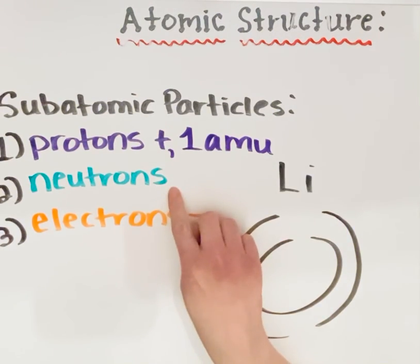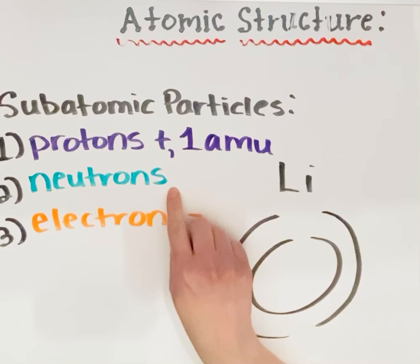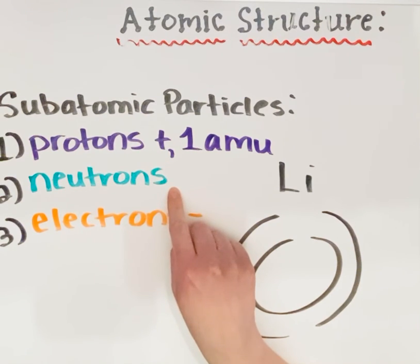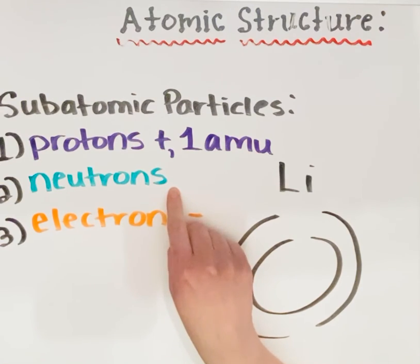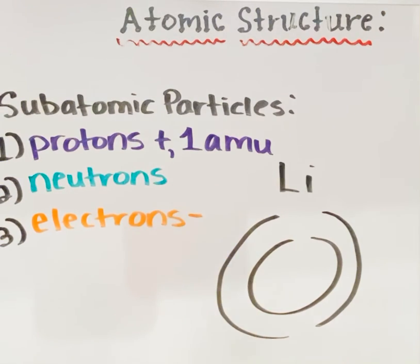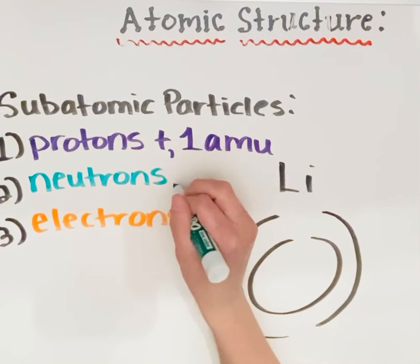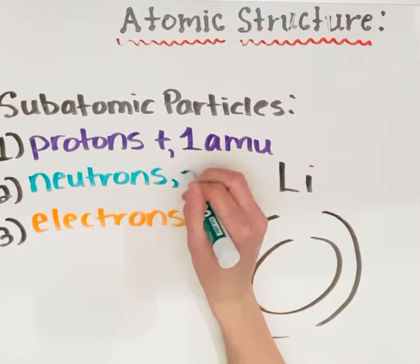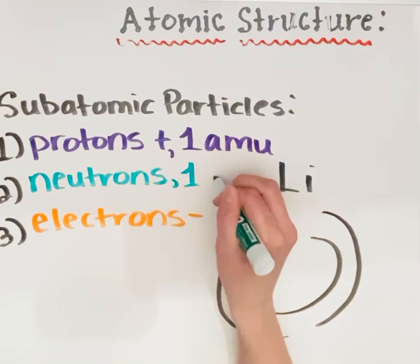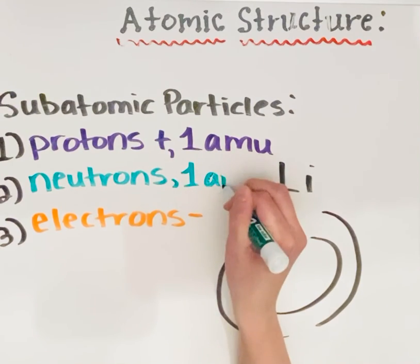Neutrons can also be found in the center, or the nucleus, of the atom, but neutrons do not have any charge. So no charge — they're neutral. Neutrons also have a mass of 1 amu.